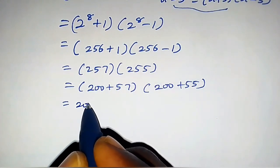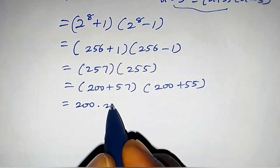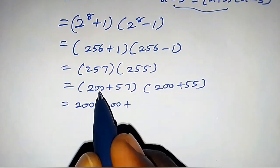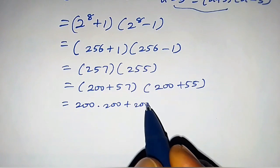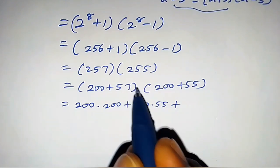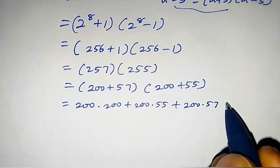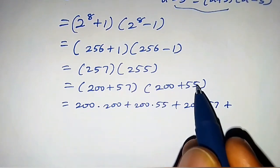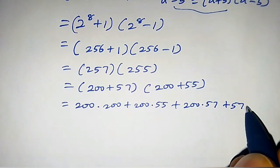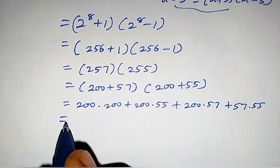This equals 200 times 200 plus 200 times 55 plus 57 times 200, that is the same thing as 200 times 57, plus 57 times 55.